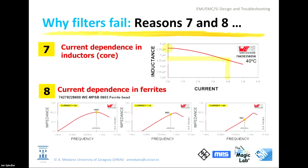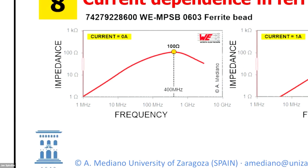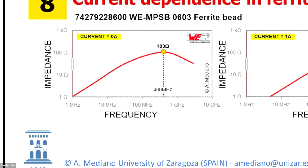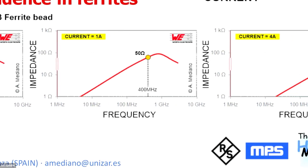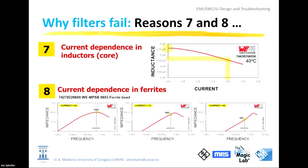This is the same with ferrites. A ferrite offering about 100 ohms at 400 MHz — if you add 1 A of DC current, the 100 ohms drops to 50 ohms. At 4 A it goes to 18 ohms. This is another typical situation where your component is failing because you are thinking only about the noise you want to filter and not considering the DC or low-frequency AC current.